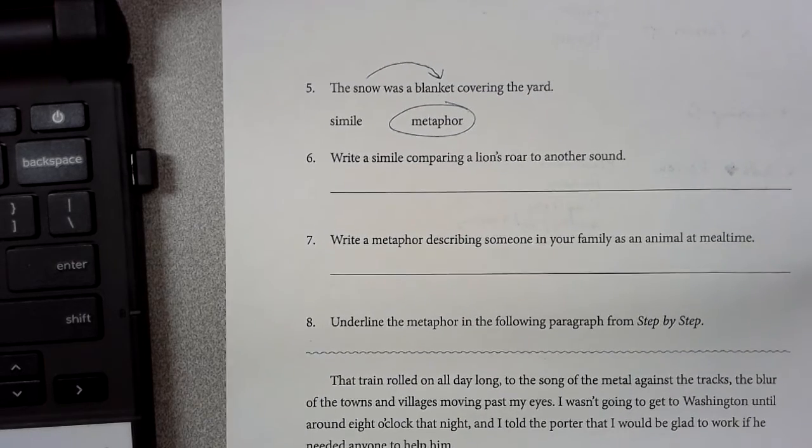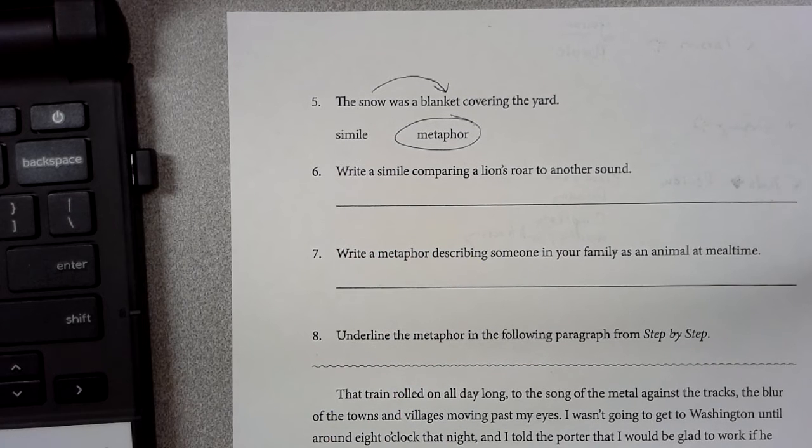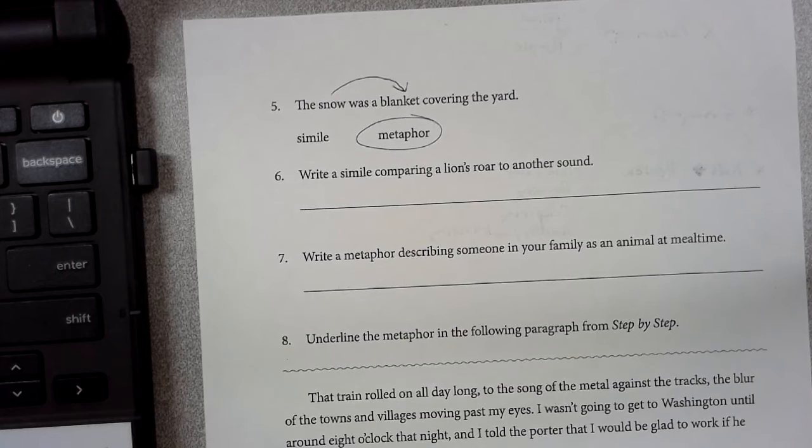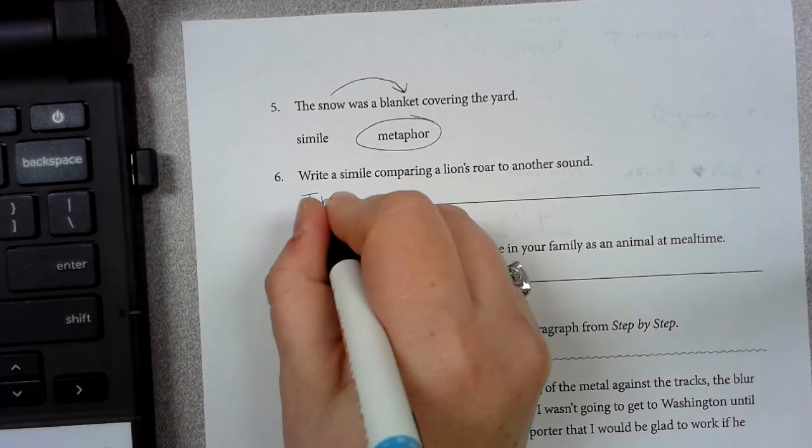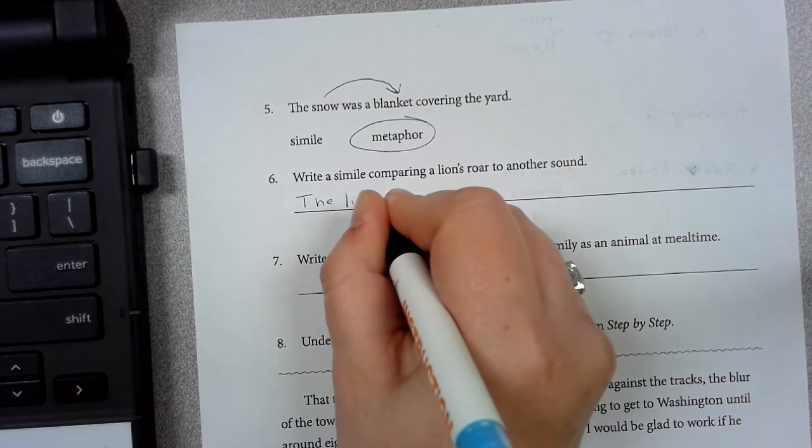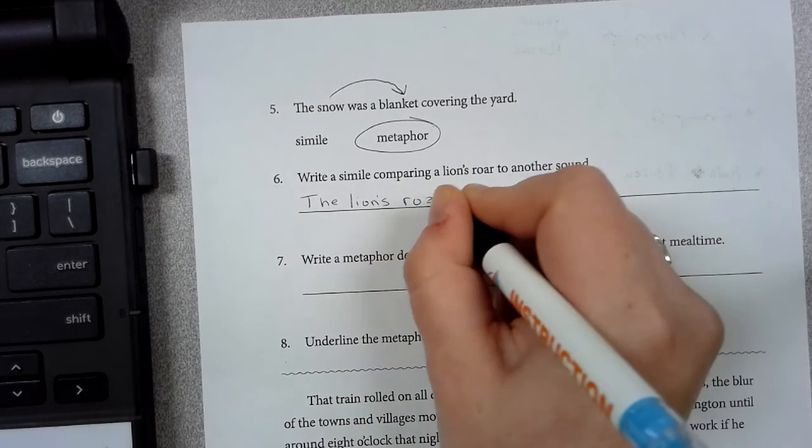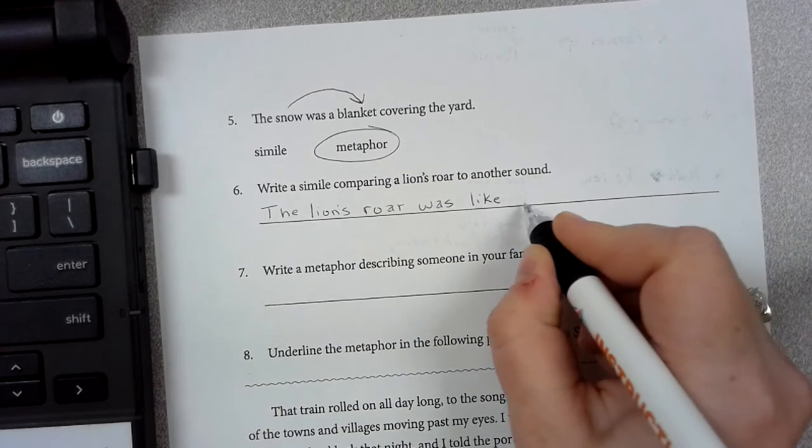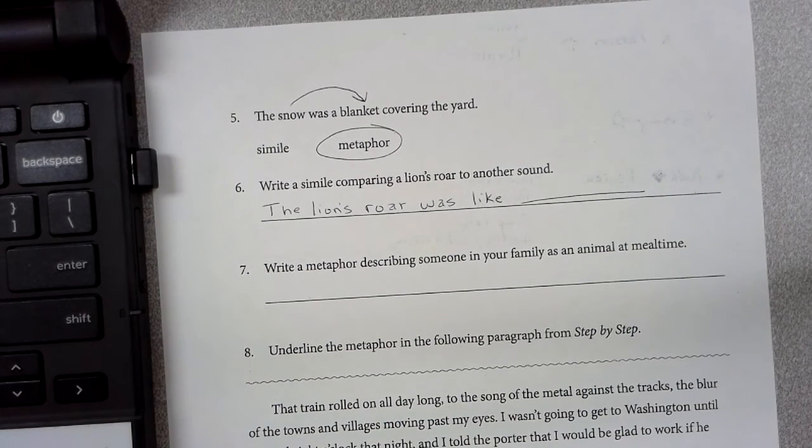Okay, for number six and seven we have to write a simile where it's comparing the lion's roar to another sound. So let's think about that. We are going to compare the lion's roar to another sound using a simile. So what we can do is—let's say the lion's roar was like what? Remember, those lion roars are loud, so think of something loud and fill in the blank: the lion's roar was like blank.